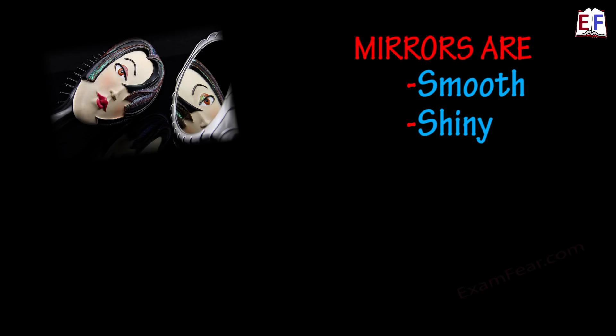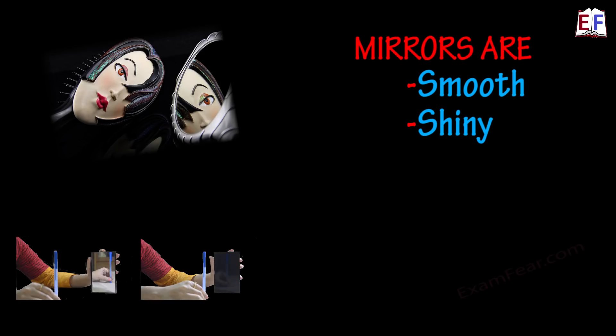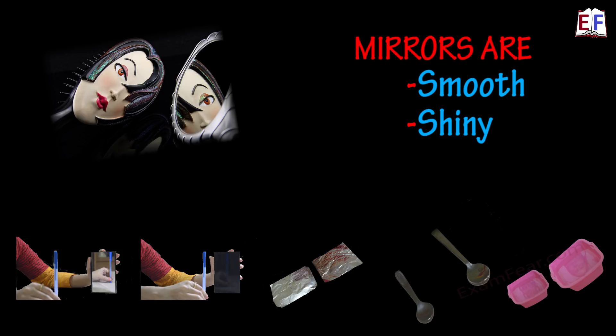We learnt that mirrors are smooth and shiny. Let's explore some of the objects around us and see if smooth and shiny are the important criteria for surfaces to behave as a mirror.